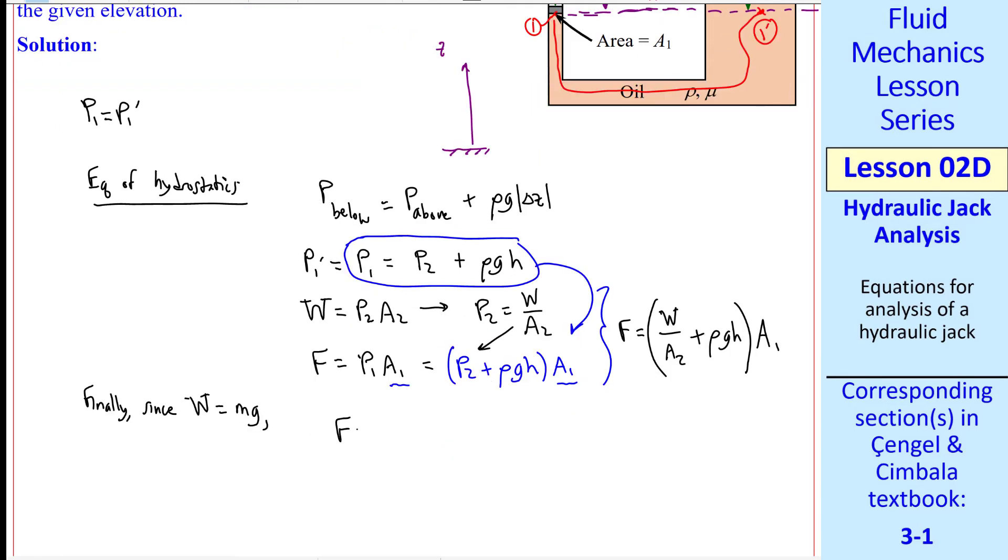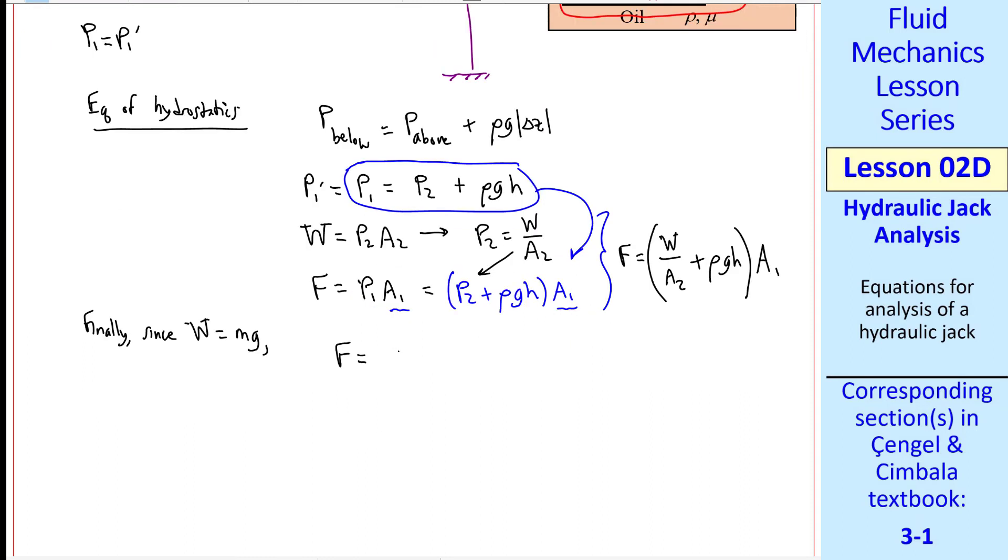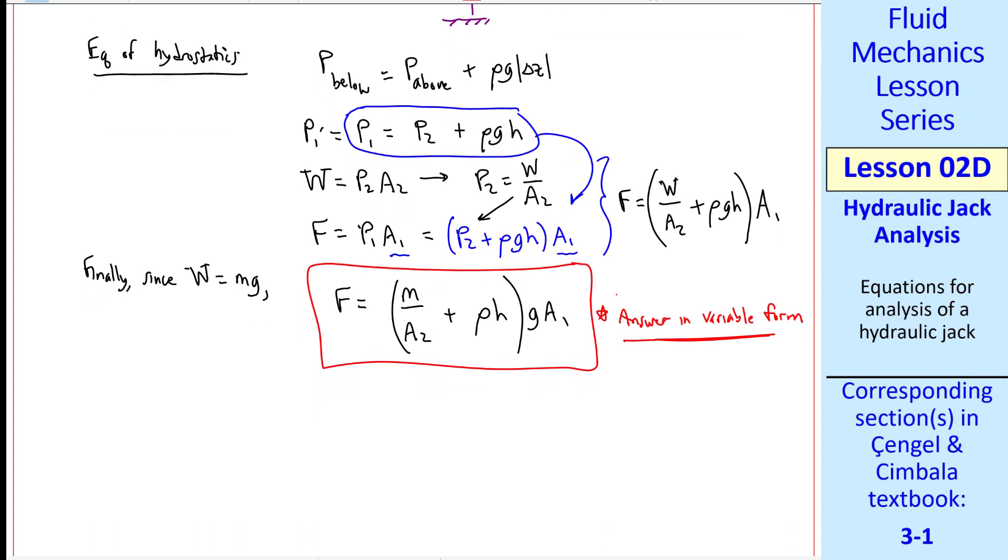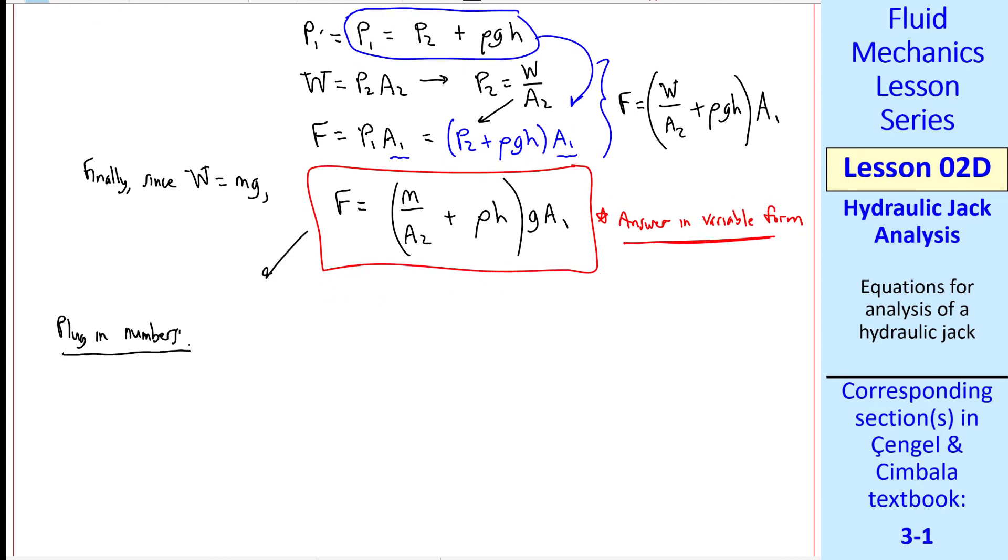Finally, since W equal mg mass times gravitational constant, the final expression for our force is M over A2 plus rho H quantity times G times A1. This is our answer in variable form. As I've stated previously, always stay in variable form as far as possible before plugging in any numbers. Now we're ready to plug in numbers.